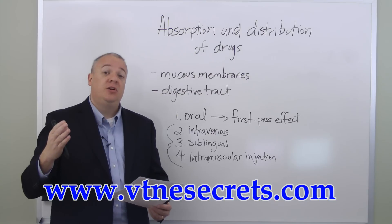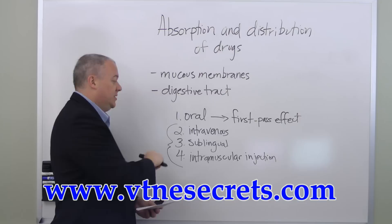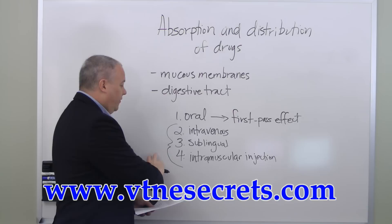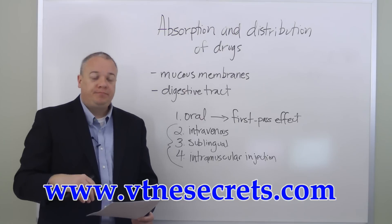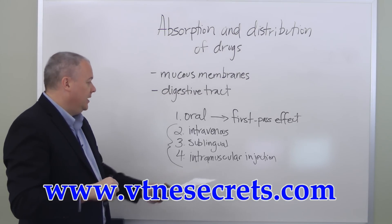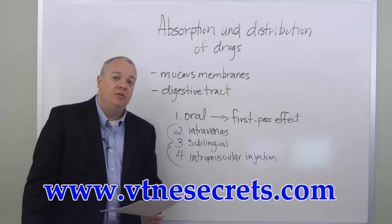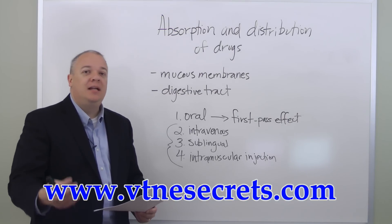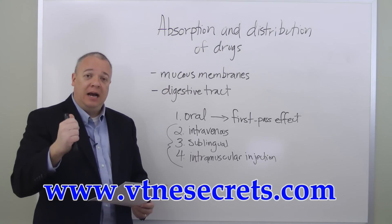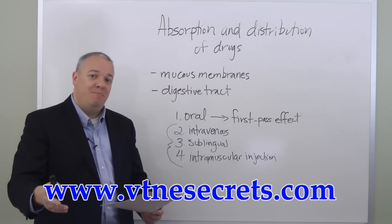Other methods of getting drugs absorbed more rapidly and with greater intensity include: intravenous administration, inserting the drug directly into the circulatory system so it rapidly travels around and is absorbed; sublingual administration, or beneath the tongue, where it dissolves and gets immediately into the bloodstream; and intramuscular injections, put directly into a muscle or fatty tissues, as many immunizations are administered. The drug itself, the body, and the method of administration all play a factor in how quickly the drug is absorbed, how rapidly it's distributed, and the overall impact of the drug.